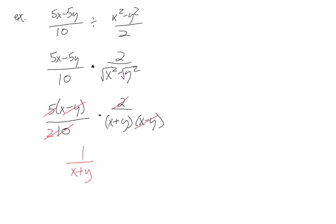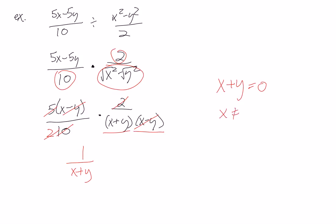We've got to be a little careful with non-permissibles here. The 10 on the bottom doesn't have any, and the 2 on the top doesn't have any. So all we've got to worry about is the (X squared minus Y squared), which factors as (X plus Y) and (X minus Y). Because we have two variables, we just bring Y to the other side: from (X plus Y) we get X can't equal negative Y, and from (X minus Y) we get X can't equal positive Y. So those are our two non-permissible values.